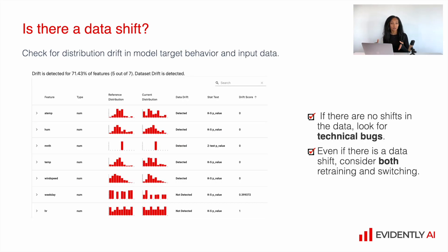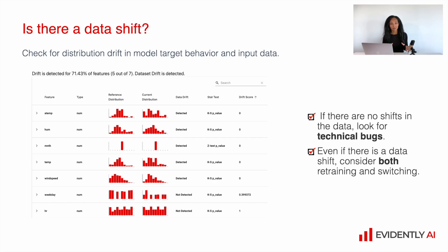If there are no data quality issues, it might be a data shift — some changes in input data distributions or something similar. In this case, it makes sense to figure out whether we have a shift in our important features and identify the source of those shifts. After understanding the source of data shifts, we can decide on next steps — we might want to switch to another system like a rule-based or manual review system, or we can run the retraining process and measure whether we trained a good model.